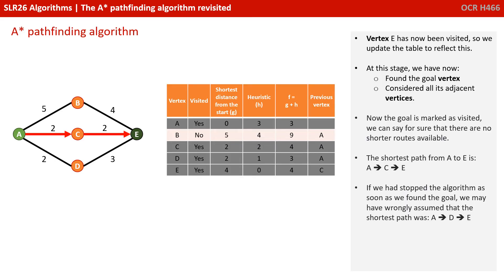The shortest path, therefore, from A to E is ACE. If we'd stopped the algorithm as soon as we'd found the goal, we may have wrongly assumed the shortest path was ADE.